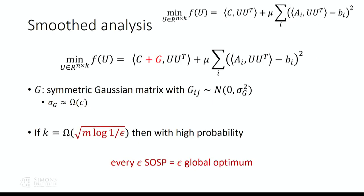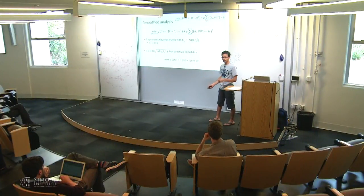When we say perturbation, we mean it in the smooth analysis sense: we take the objective C and add a random Gaussian perturbation G, where G is a symmetric Gaussian matrix with standard deviation epsilon. We look at the penalized problem with C replaced by C plus G. The rank target is square root of M times log(1/epsilon). Once we do this, we can show that with high probability, every epsilon second order stationary point is an epsilon global optimum.